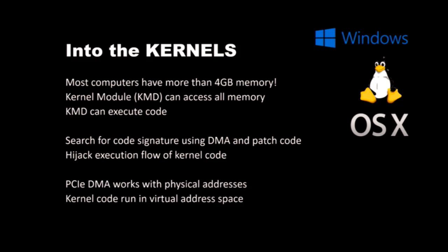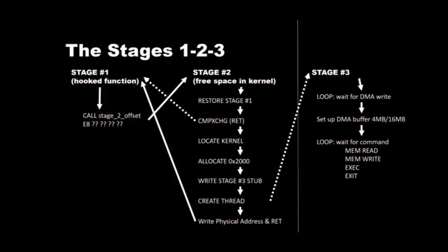When doing this, we need to keep in mind that PCI Express DMA works with physical addresses while kernel code runs in virtual address space. I divided exploitation into 3 stages. Stage 1 is pretty much just a hook. Stage 2 is the stager for the final Stage 3 kernel module implant. We start by trying to locate the kernel, or a driver, in kernel space that we can target. Usually at the end of the kernel itself or a driver there is some free space in the last page, because it's usually not completely filled out — and that page is already executable, so we put our stage 2 code there, which is around 500 bytes.